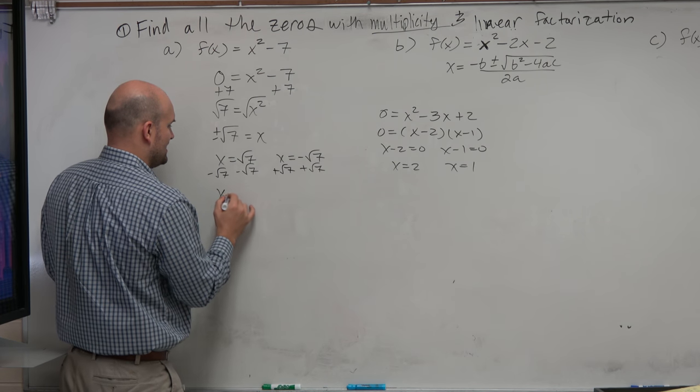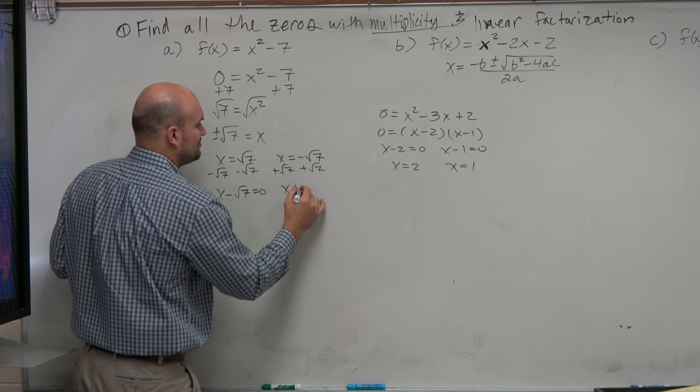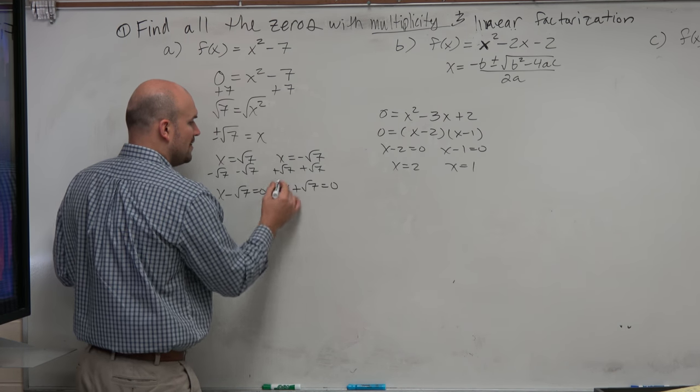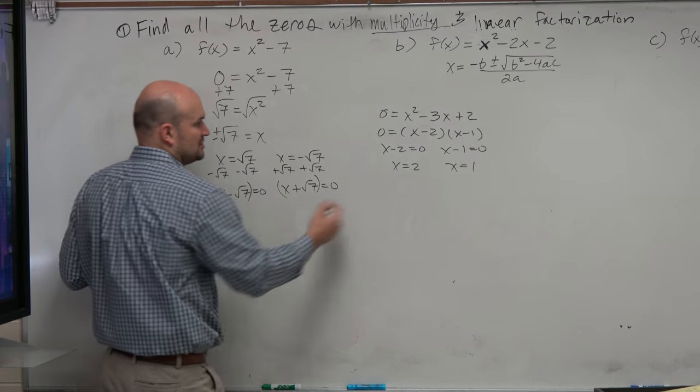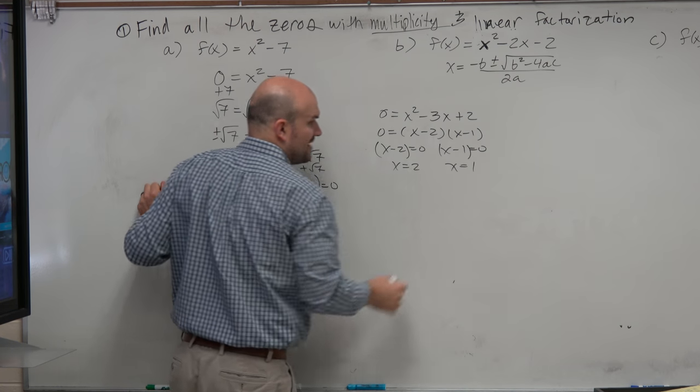So therefore, I have x minus square root of 7 is equal to 0, and x plus square root of 7 is equal to 0. These are the factors, just like these are the factors.